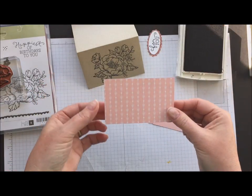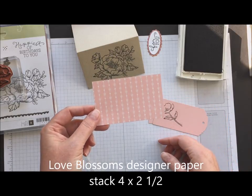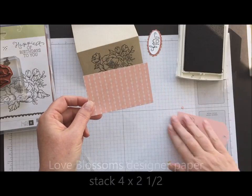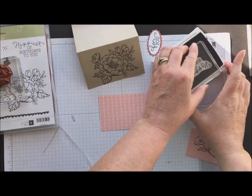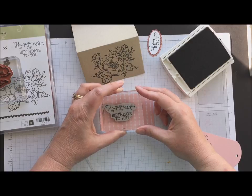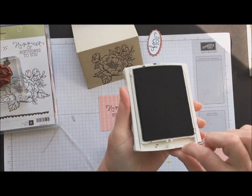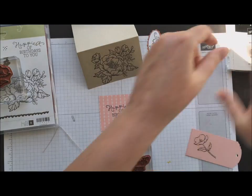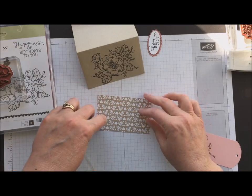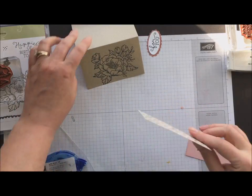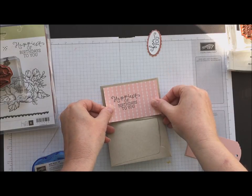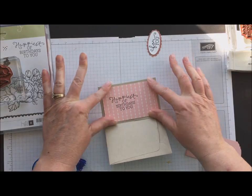So the next step I have is a piece of designer paper from our Love Blooms paper stack in the occasions catalog and this one measures four by two and a half. And I'm just going to stamp my happiest birthday right on that paper. Okay now I'm done with my ink pad so let's scoot everything out of the way. And a little bit of snail would work fine on this. This piece is going to be covering the flap that we glued down on the inside of our gift card holder. So that'll go right there.